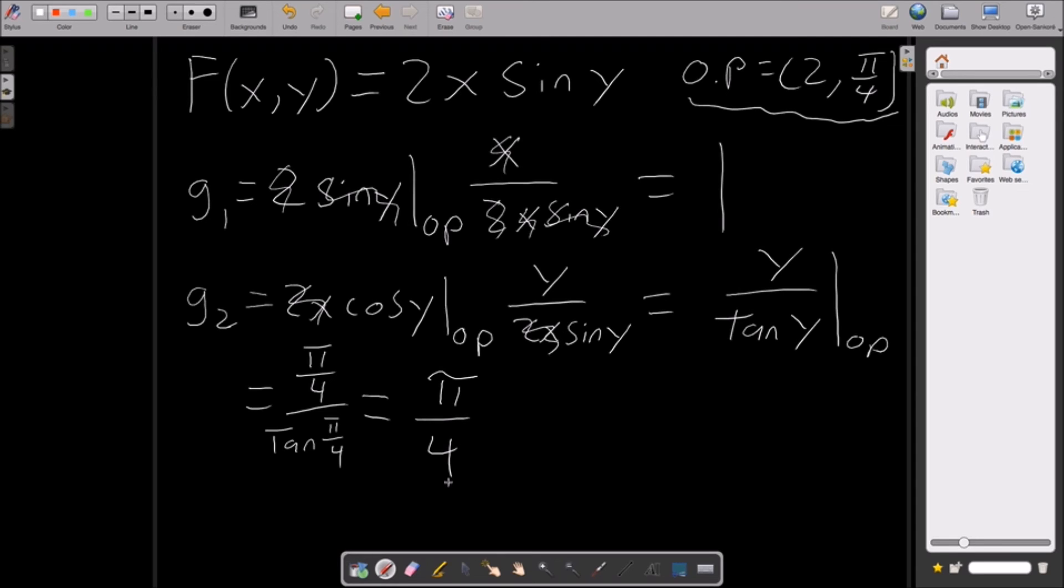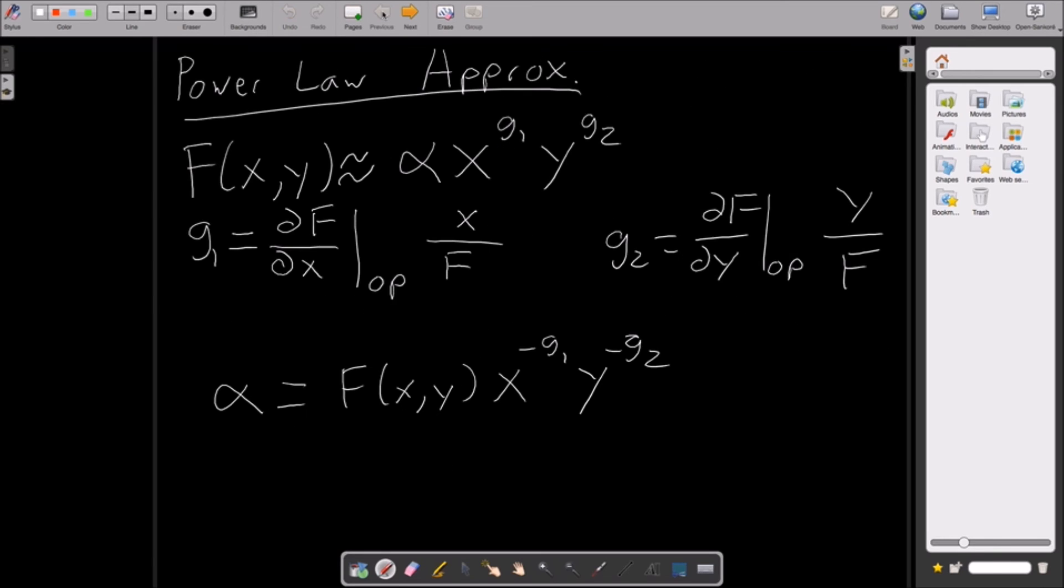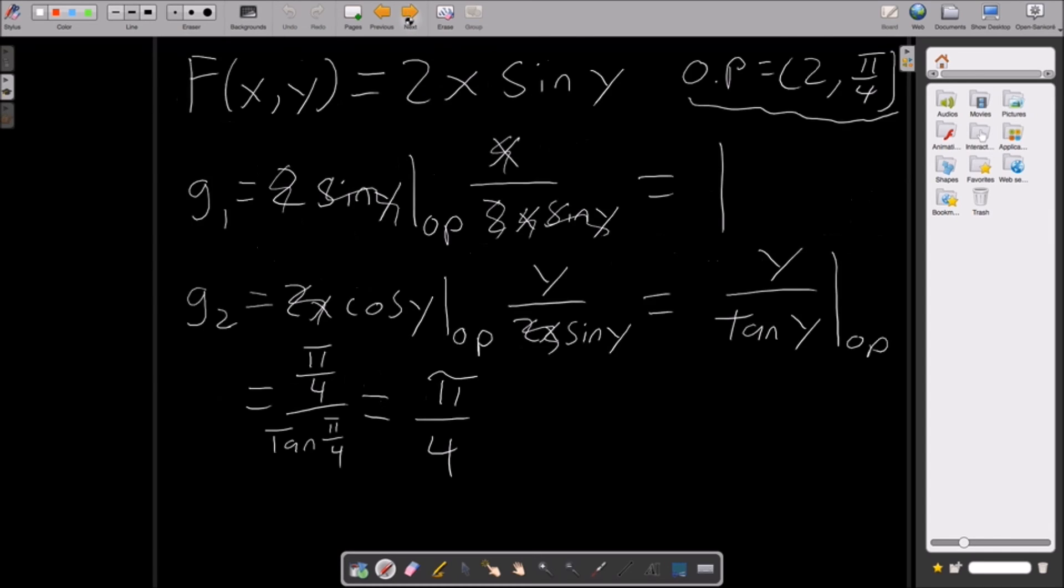Awesome. Yes. This is getting exciting. So with this, now we can go on to solving for the alpha value. Alright. Alpha. Well, let's see what alpha was before. So alpha was the function f of x, y times x raised to the negative g1 times y to negative g2. And we have everything else. Alright. So we can just plug it in. Awesome. We should get a number. Alright. So let's do that.